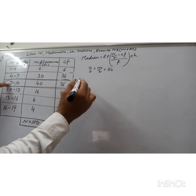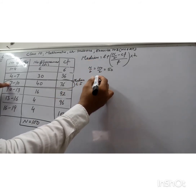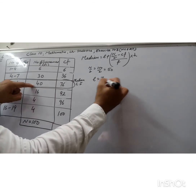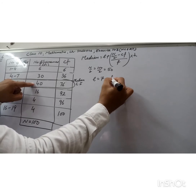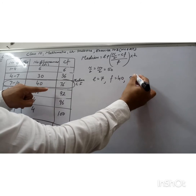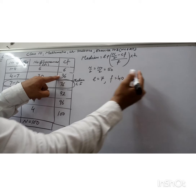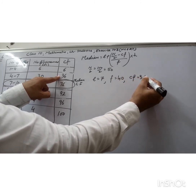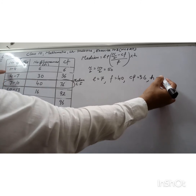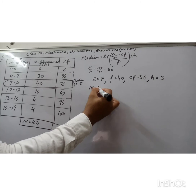The lower limit of the median class is l = 7, and the frequency of the median class is f = 40. For cf, we take the cumulative frequency just less than 50, which is 36. The class size h = 3.